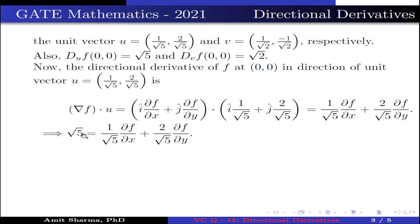This equals √5, because the directional derivative of f in the direction of u at (0,0) is √5. Multiplying both sides by √5, we get: ∂f/∂x + 2·∂f/∂y = 5. This is equation one.